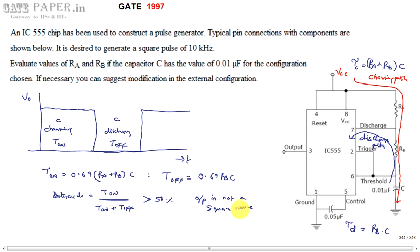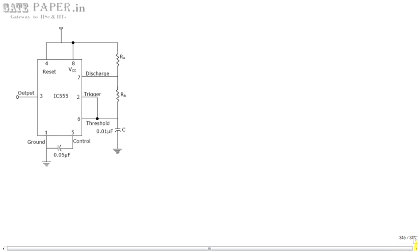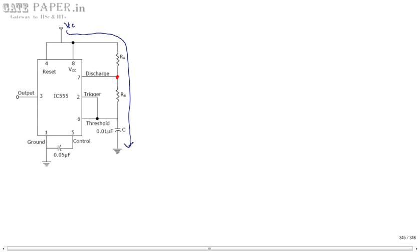We must modify this circuit to get a square wave. Since the charging path is larger compared to the discharging time, τ_ON is greater than τ_OFF, so we need to reduce T_ON. To reduce T_ON, we connect a diode across RB such that the P side connects towards VCC and the N side connects towards the capacitor.